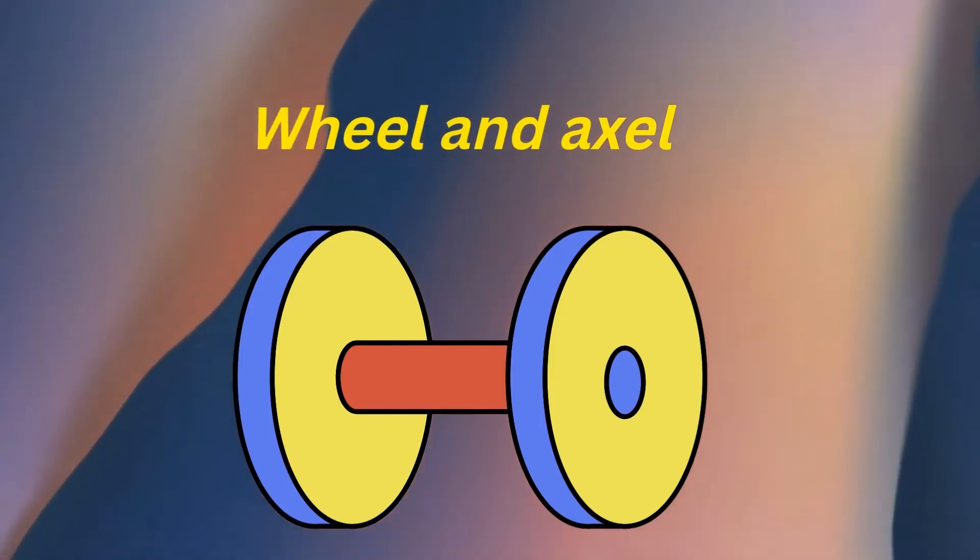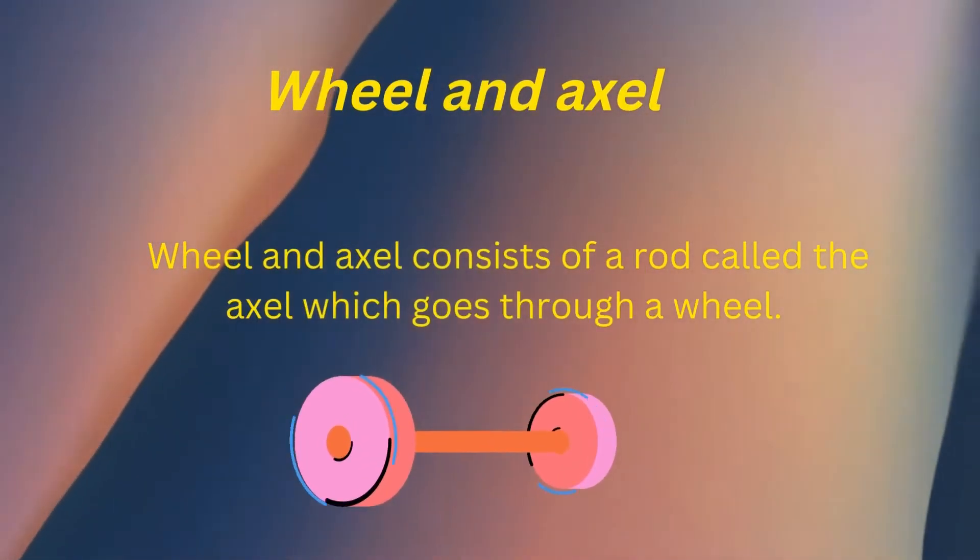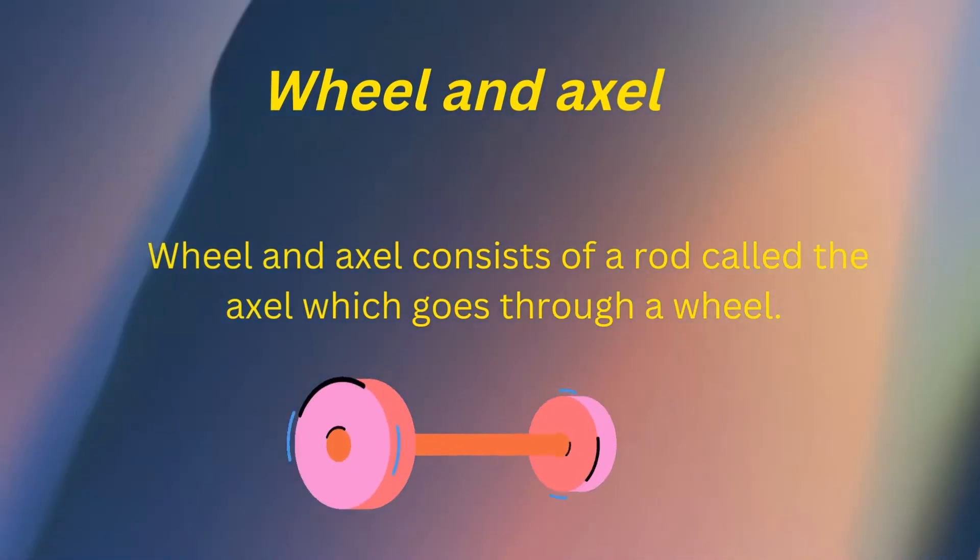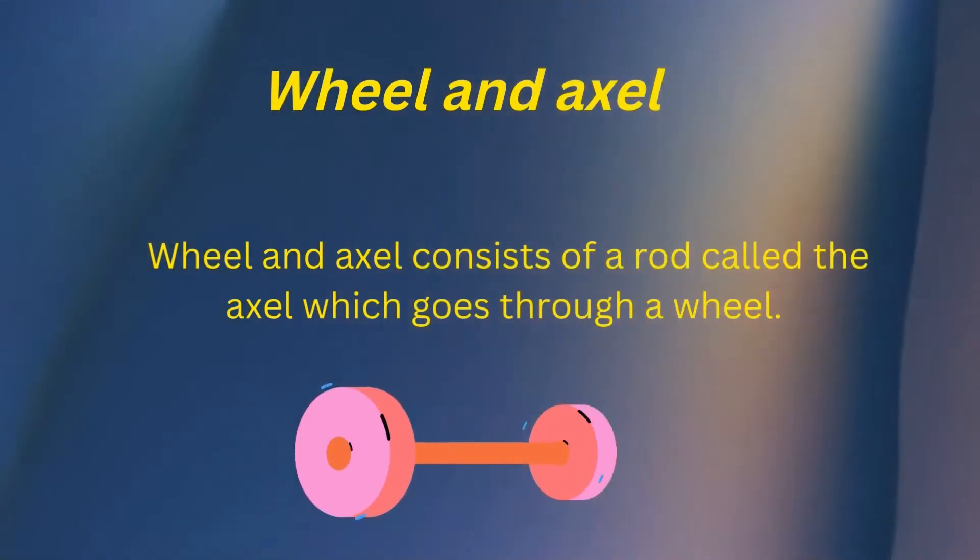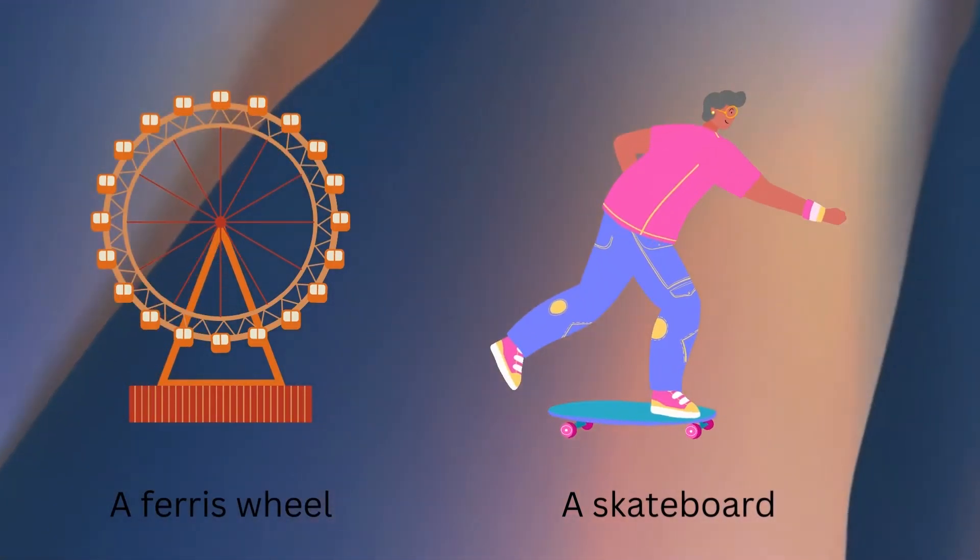After the screw comes the wheel and axle. The wheel and axle consist of a rod called the axle which goes through a wheel. A wheel and axle make movement easier. Some examples of wheel and axle are a skateboard and a ferris wheel.